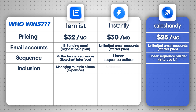But here's where things get interesting. If you are an agency or managing multiple clients, Lemlist's per-person pricing can get expensive very fast. Instantly, on the other hand, offers unlimited clients and team members, but only on their expensive plans. Sales Handy, however, lets you add unlimited clients and team members at no extra cost, even on their starter plan.